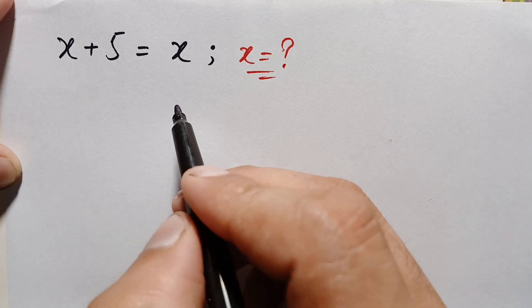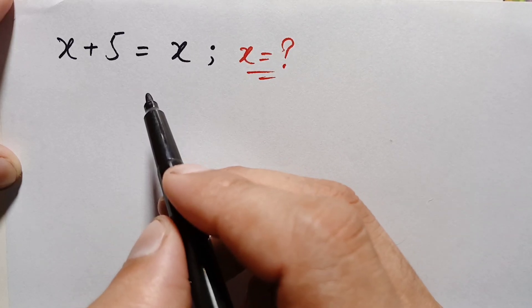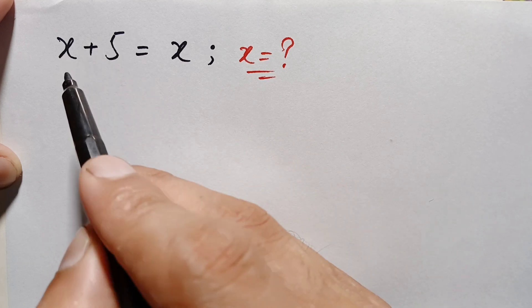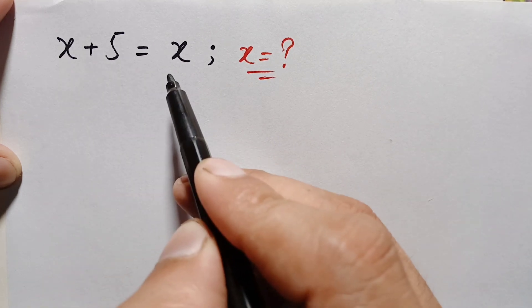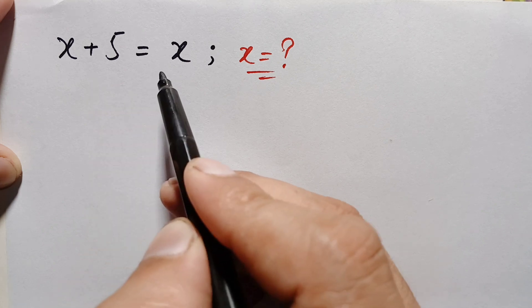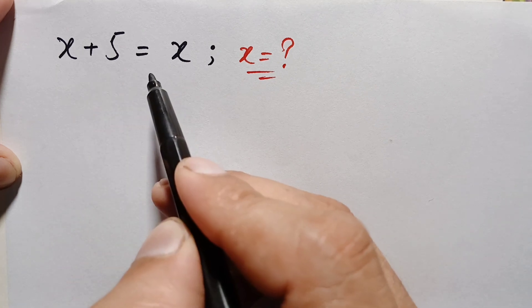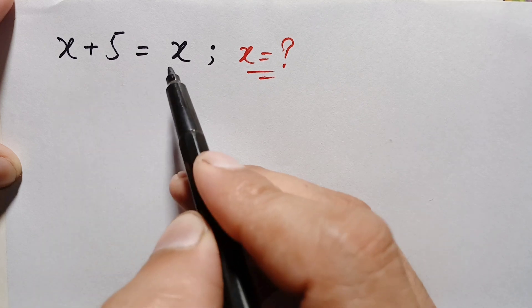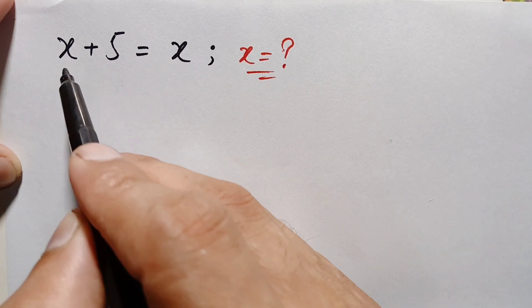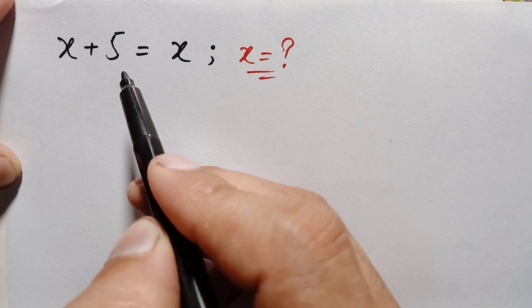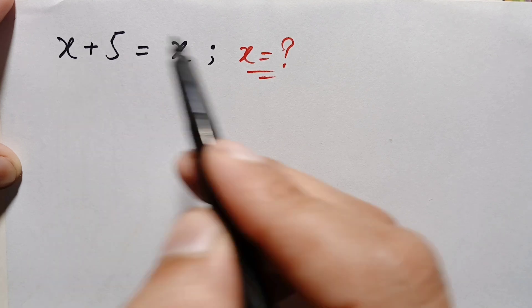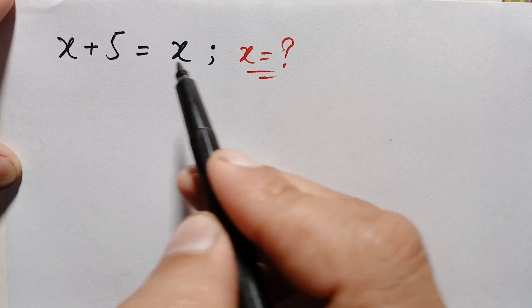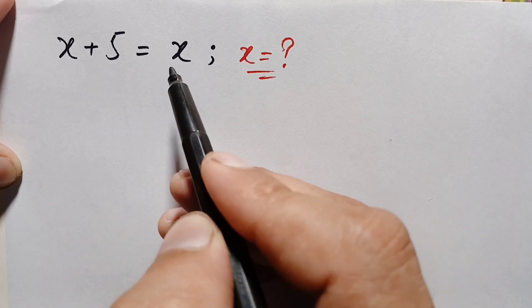Hello everyone, welcome. In this video I'm going to find the real solution of this interesting math problem: x plus 5 is equal to x. Looking at this problem, there is x on the left-hand side and x on the right-hand side, both with the same sign. If we move x to the right-hand side it becomes negative x, and positive x and negative x cancel, leaving 5 equals 0, which is not possible.